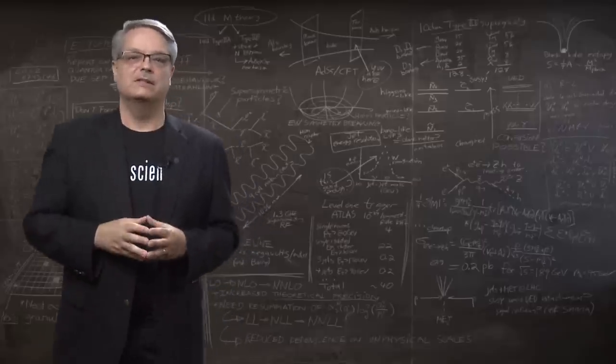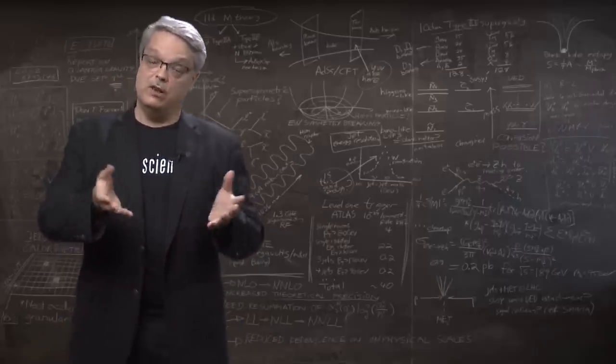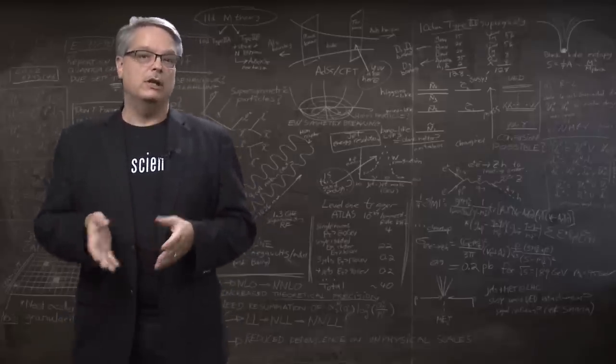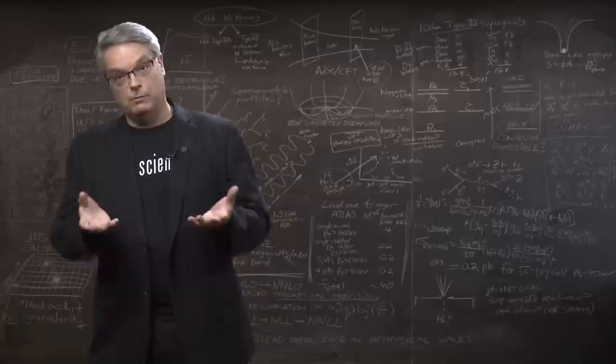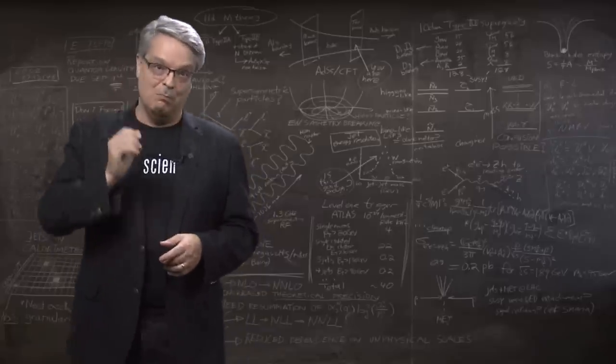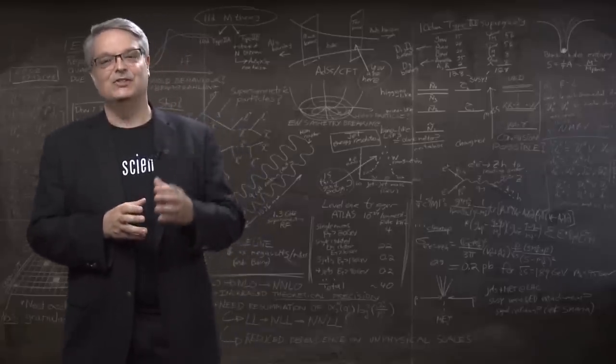So that gives you the basics. But I think the takeaway message is the following. Colliders with protons or antiprotons are for discovery, while colliders with electrons and or positrons are for precision. And remember that you need both to understand the secrets of the universe.